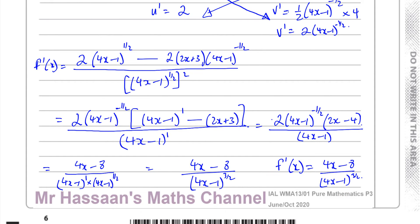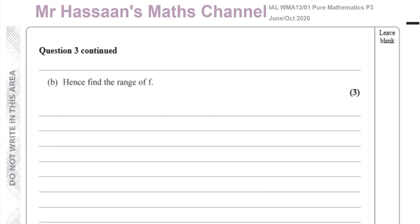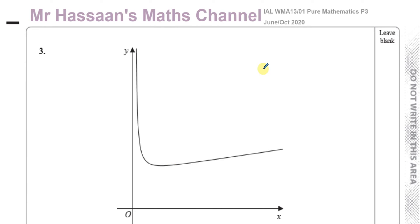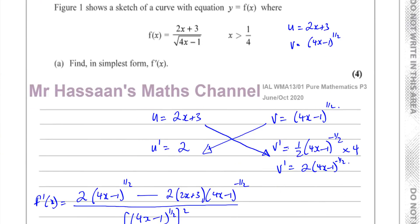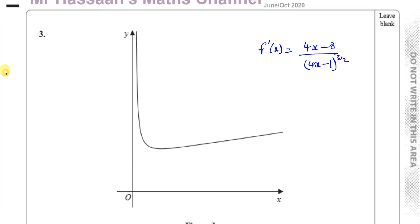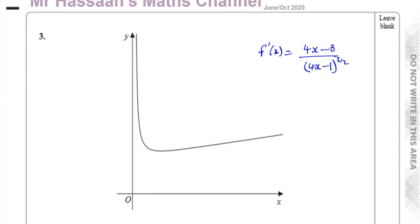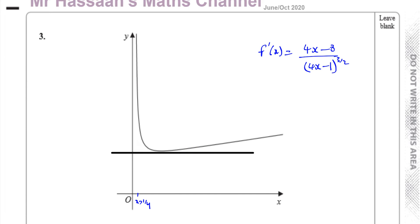For part B: find the range of f. The range of a function is the y values it can take. This function has a domain of x greater than a quarter and continues with a turning point visible on the graph. The turning point is where the gradient equals zero — we haven't found it yet, but that is what the turning point is.